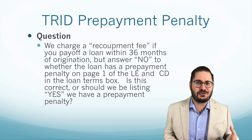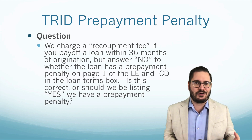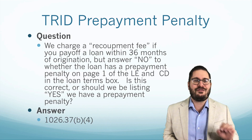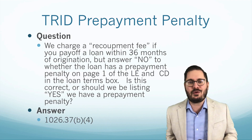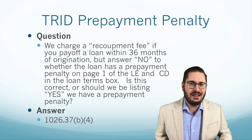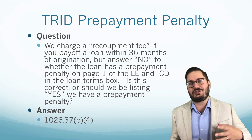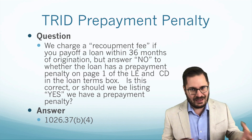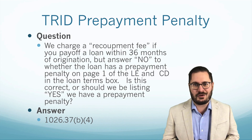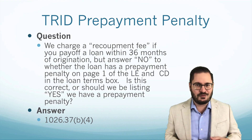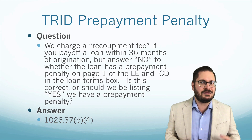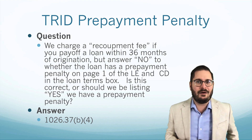The answer to this is going to come from TRID and Regulation Z. It's actually found in part 1026.37(b)(4). At least this is the portion for the loan estimate that does apply to the closing disclosure as well. We also have to look at the commentary, so there's quite a bit to look at here.